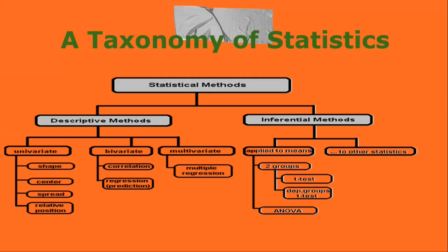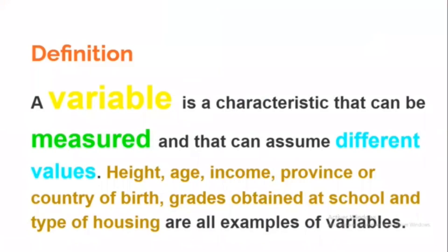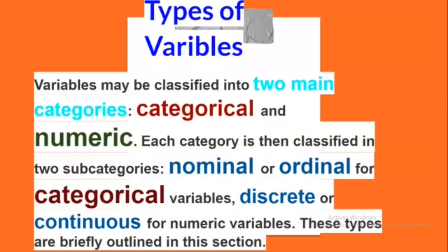A variable is a characteristic that can be measured and that can assume different values. Height, age, income, province or country of birth, grades obtained at school, and type of housing are all examples of variables. Variables may be classified into two main categories: categorical and numeric. Each category is then classified into two subcategories: nominal or ordinal for categorical variables, and discrete or continuous for numeric variables.